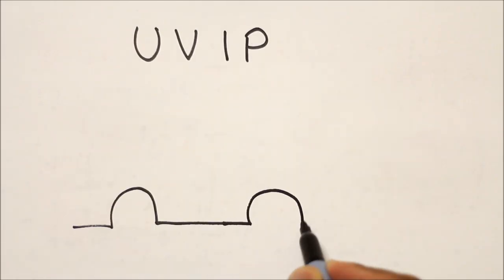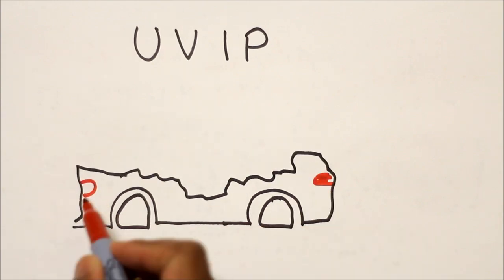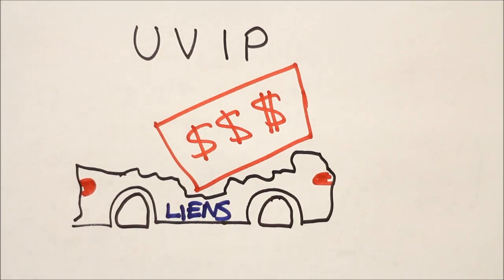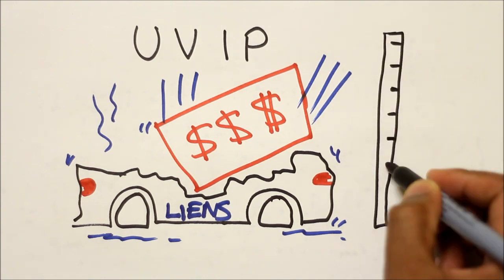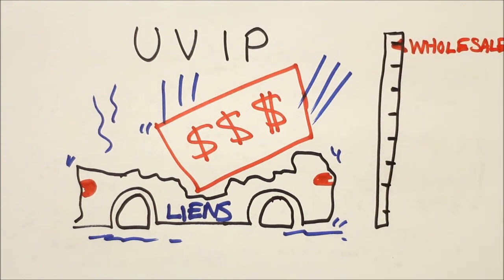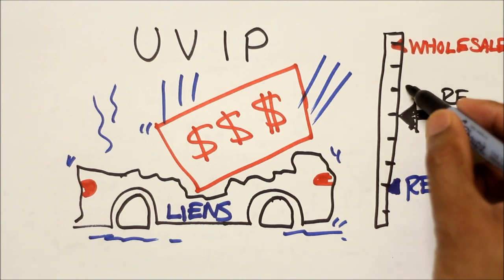The UVIP will tell you if there's any liens registered on the car. Buying a car with a lien means that you'll be responsible for somebody else's debt. The wholesale and retail value is also given to give you an idea of what you should be paying for the car as well as how much you'll be paying taxes upon.